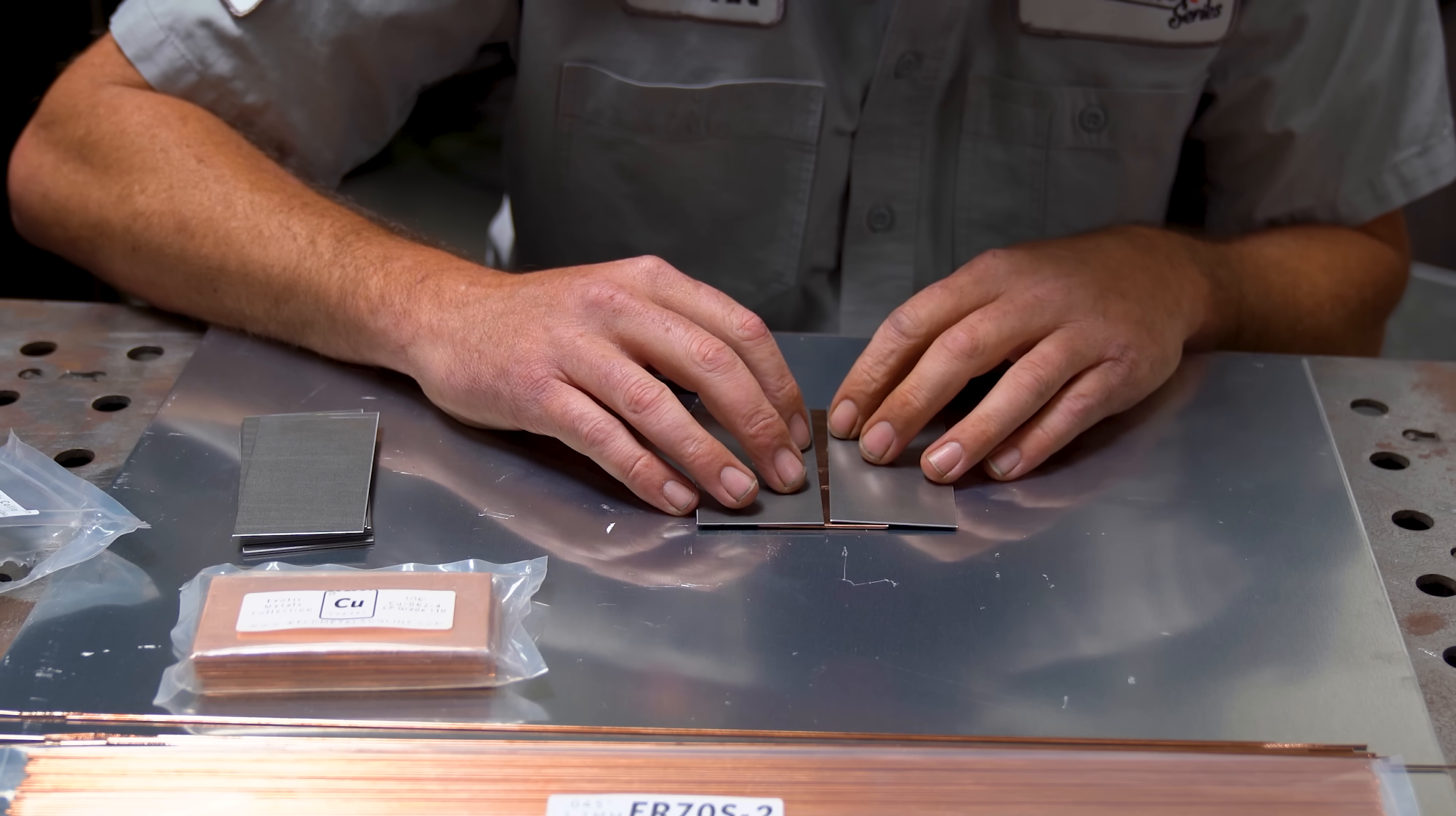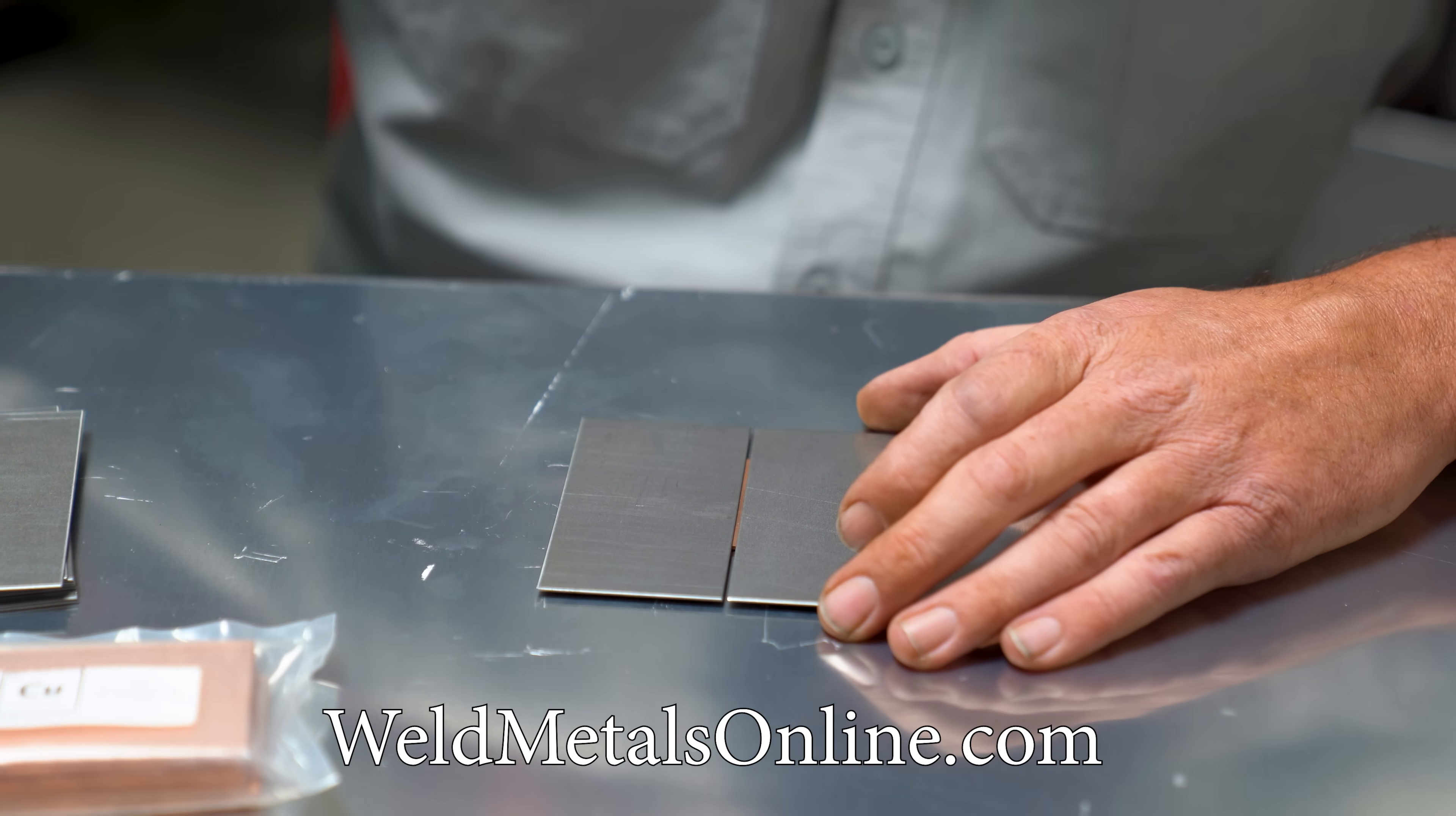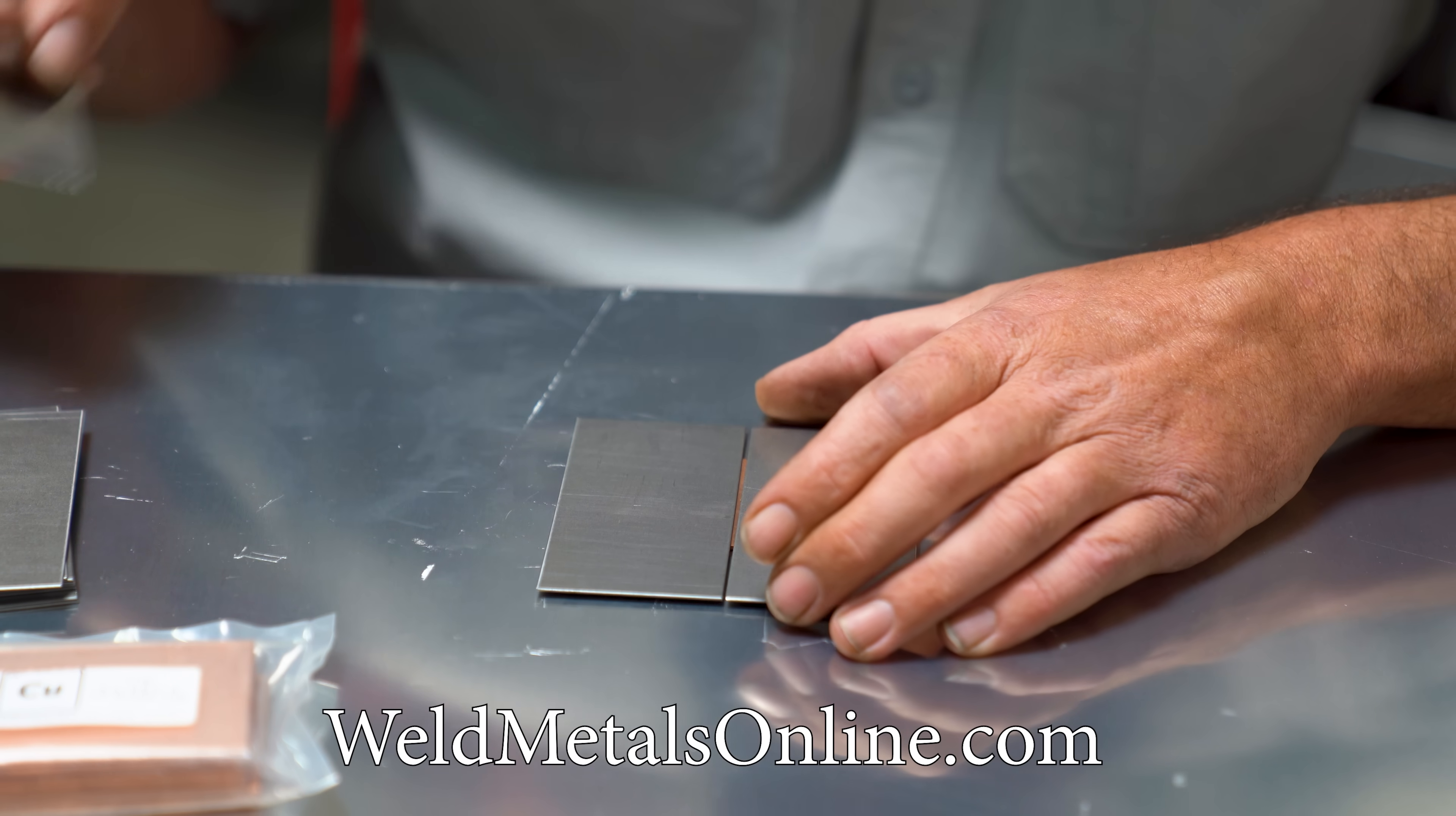Now I'm setting up a mock joint to practice on before I jump on the part itself. These coupons from weldmetalsonline.com are a perfect way for me to practice. I'll first lay down a copper coupon, followed by two 20 gauge carbon steel coupons set to the same gap width as the part.